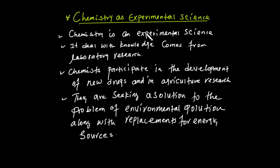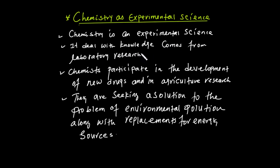Now let's come to chemistry as an experimental science. Chemistry is an experimental science — it is real, practical work. It deals with knowledge that comes from laboratory research. Every activity in chemistry involves experimentation, and findings come from laboratory research.